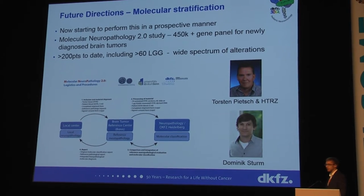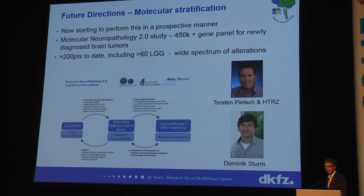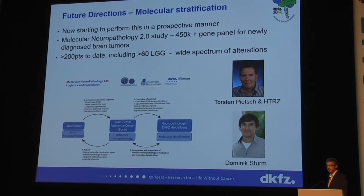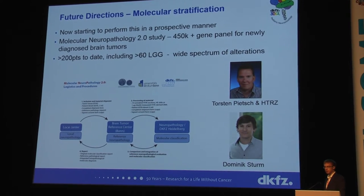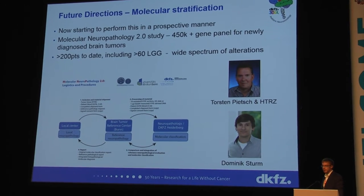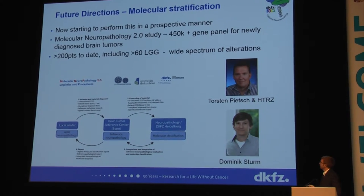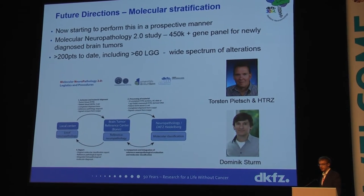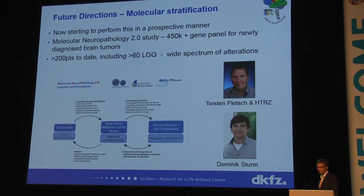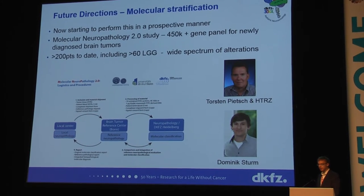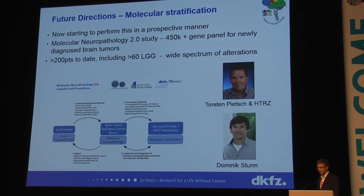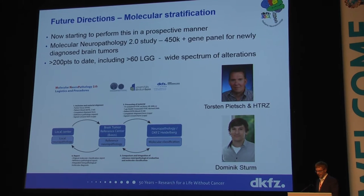What we're starting to do is look at that in a prospective manner, through a study called Molecular Neuropathology 2.0, where we do DNA methylation and gene panel sequencing for all newly diagnosed brain tumors across Germany. To date, we've had around 60 low-grade gliomas included in that series, and they're really reflecting this wide spectrum of molecular alterations that we're now starting to expect. By doing this for all newly diagnosed patients, we can start to get an unbiased view of how frequent some of these alterations are in the different groups, and have good clinical annotation to see how those groups are performing in terms of outcome.